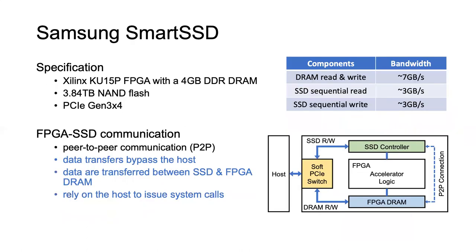Samsung Smart SSD is a computational storage that contains a Xilinx FPGA with 4GB DDR4 DRAM as well as NAND flash in the same package. It's also equipped with PCIe Gen 3x4 lanes. To support near-storage computation, Smart SSD has a new FPGA and SSD communication feature called P2P transfers. With P2P, data can be transferred between the SSD and FPGA DRAM and bypass the host. However, the P2P commands still rely on the host to issue.